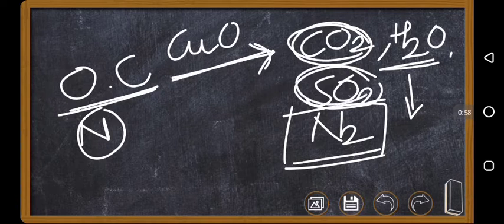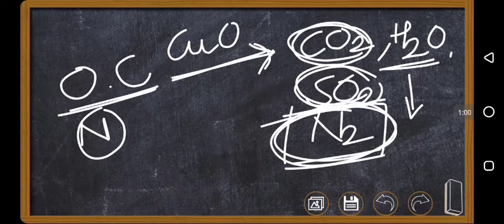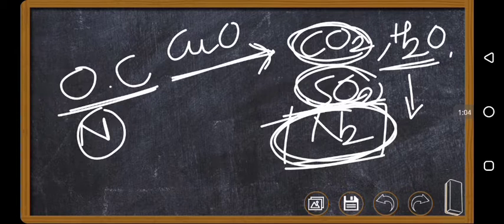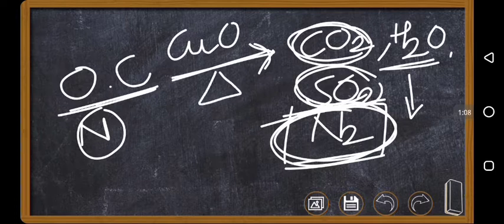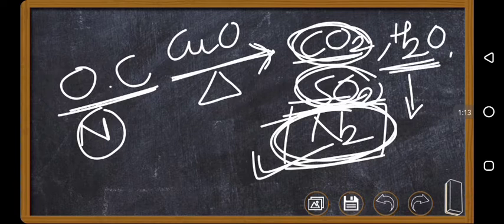So CO2 and SO2 is absorbed by KOH and you will be getting complete free nitrogen gas. So, organic compound which contains nitrogen is heated with copper oxide so that you are getting the nitrogen gas and CO2, SO2, whatever the water vapors are formed, they can be removed.